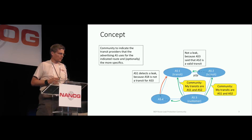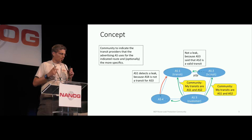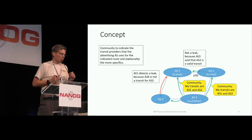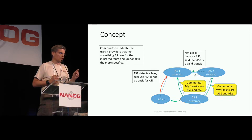The concept is that suppose customer AS3 has two transit providers, AS1 and AS2. He sends a route and in that route he puts a community that says my transits are AS1 and AS2. AS1 will receive that route through the other way from AS2, and he looks at the community he already got and says yes, AS2 is a transit. So that route is not a leak.